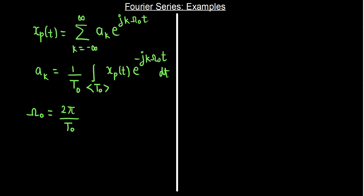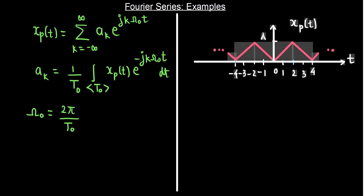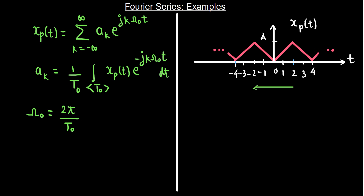In order to gain further insights into this, let us take an example. Consider the signal shown on the screen. This signal repeats after 4 units. You can see that this signal is linear from 0 to 2 and again it decreases from 2 to 4. So the fundamental period T0 is 4 units. I have taken the period from minus 2 to 2, but you can also consider from 0 to 4. So T0 equals 4.